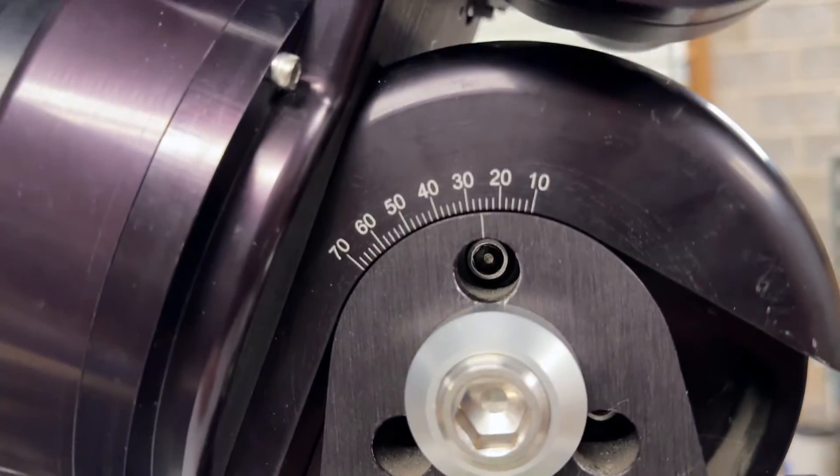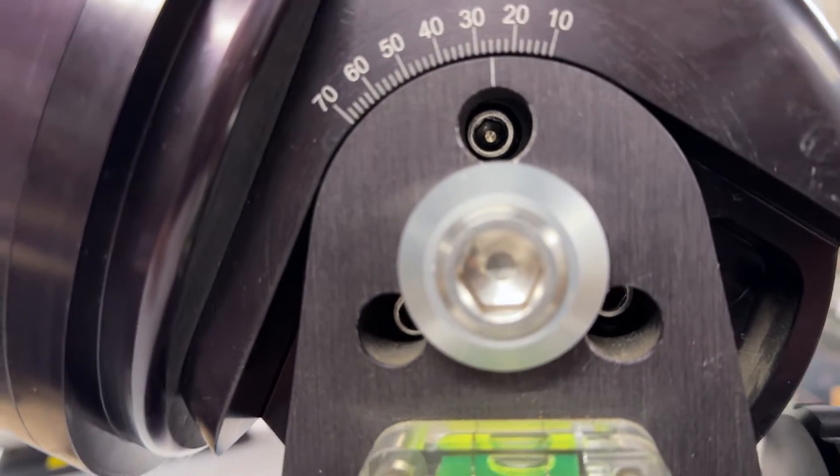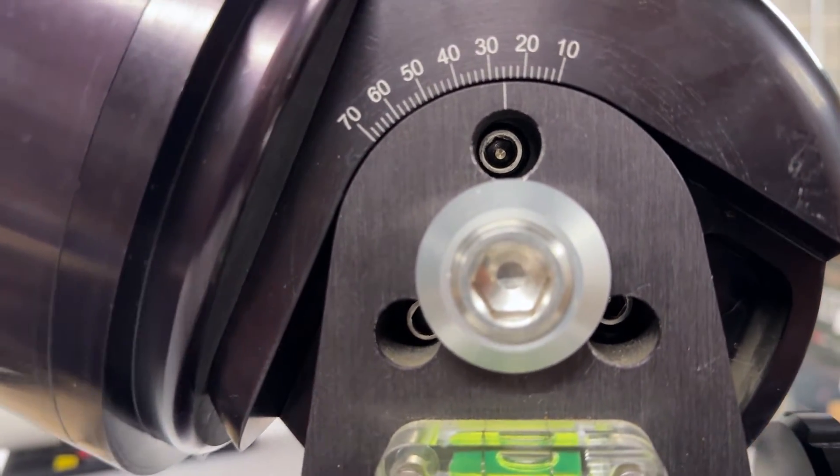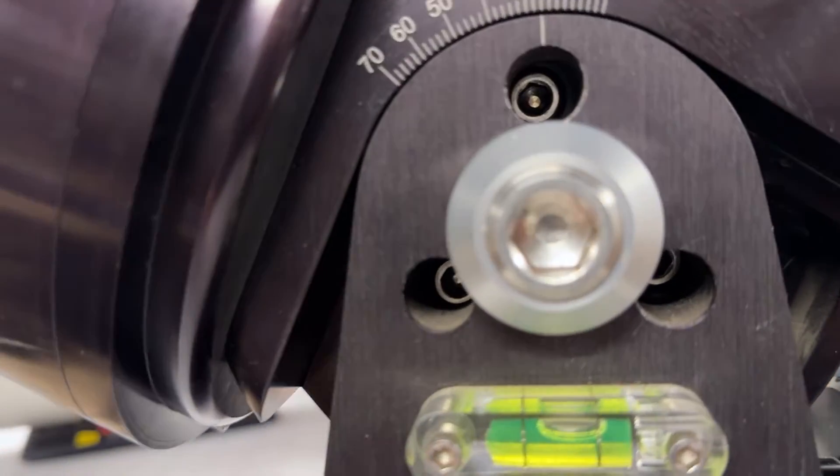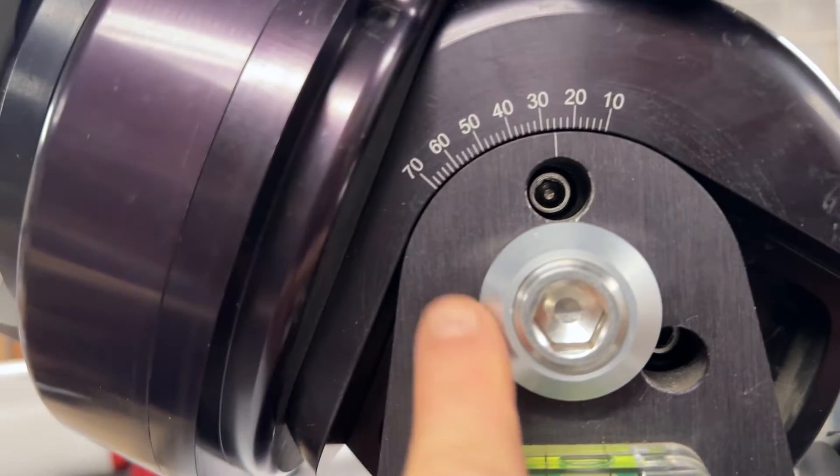So what you do is you loosen them and take them out and then you actually move the mount over to the next area. This whole thing is going to rotate and then you'll see some new holes and you put them back in and it actually moves the whole thing up.